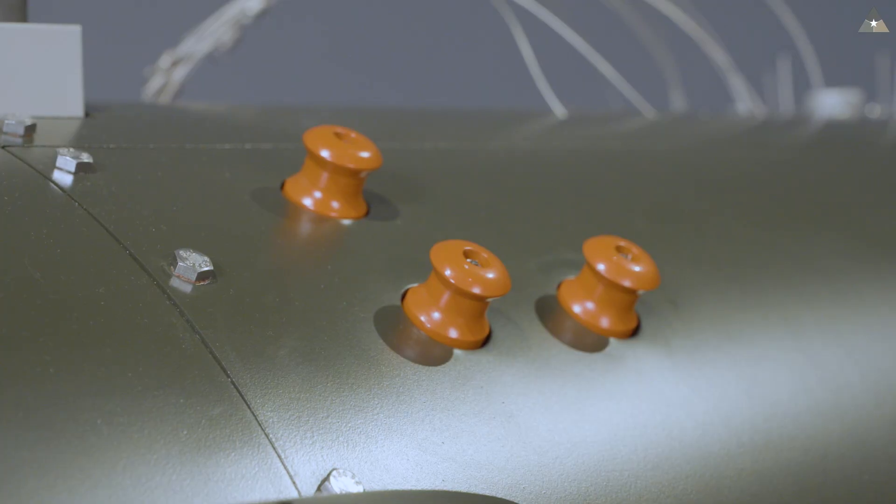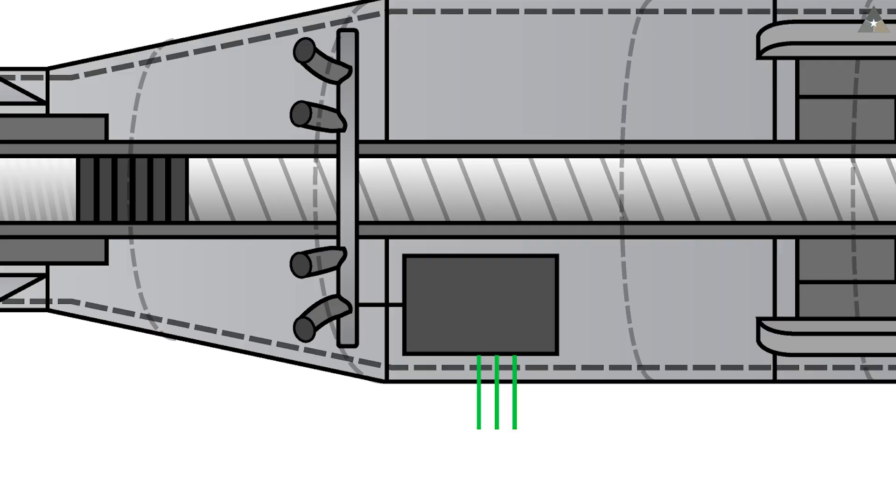These three plugs are the arming safety plugs. Until the bomb was in flight and en route to target, there would be three green plugs here which would cut off the electrical current to the primers in the gun, ensuring the safety of the weapon on the ground and during transport.